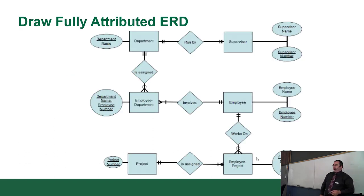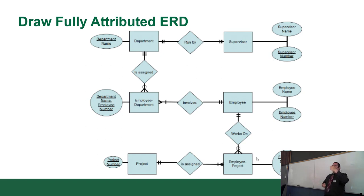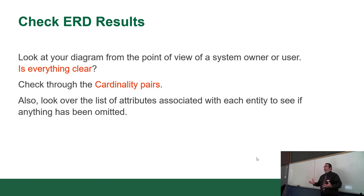Once you've reached this point, you want to look at your diagram from the perspective of a system owner or user — does it actually make sense and is it understandable? Go through the cardinality pairs to make sure there are no leftover many-to-manys or cases where you've made something mandatory when it's impossible for it to be.